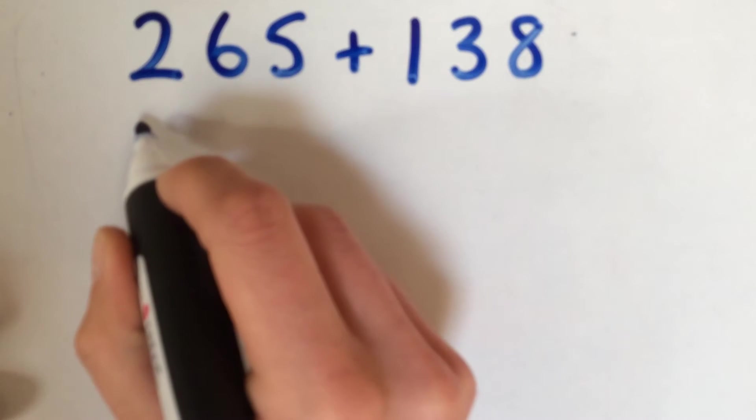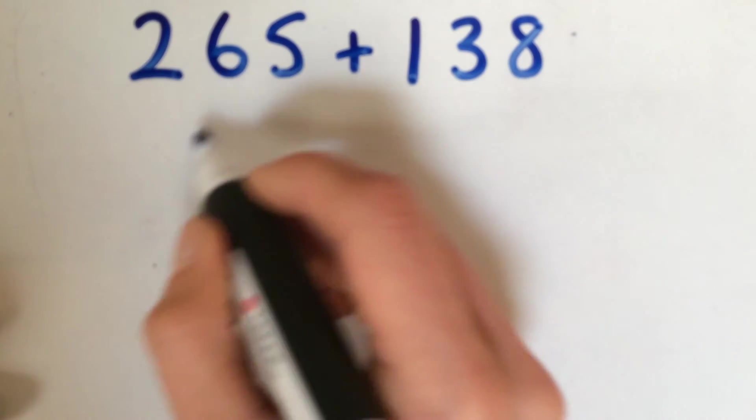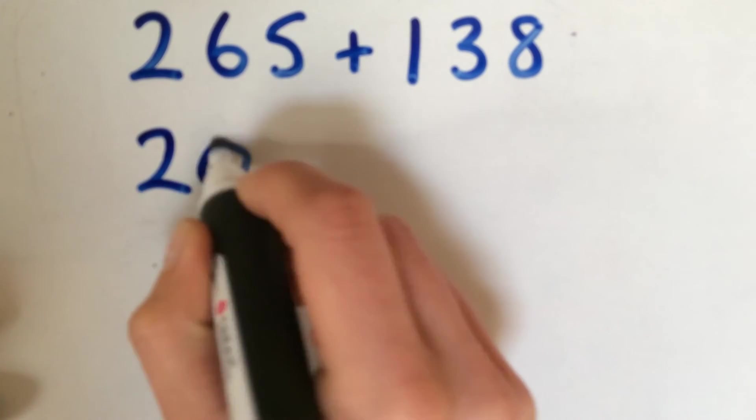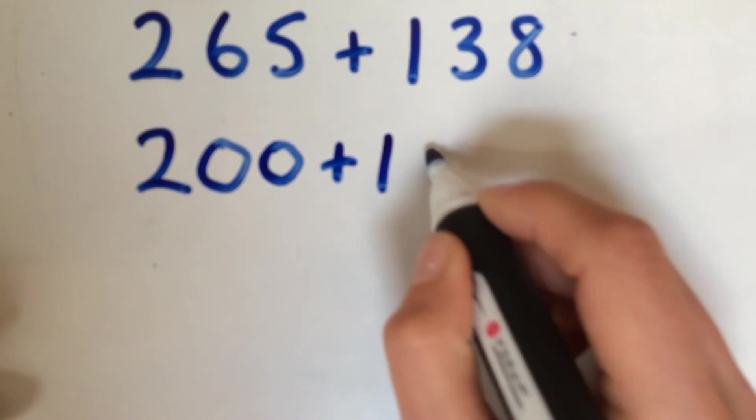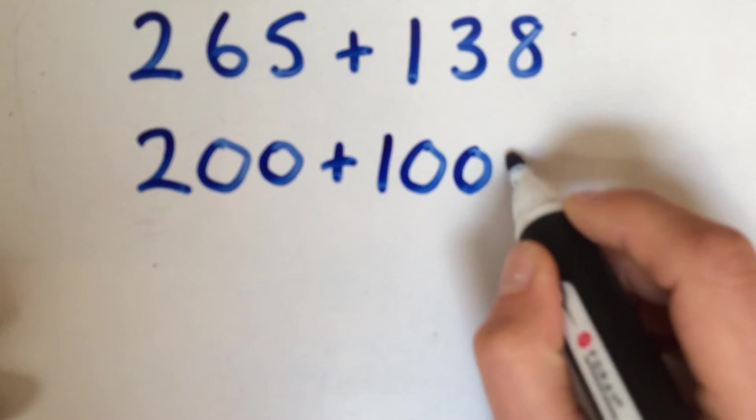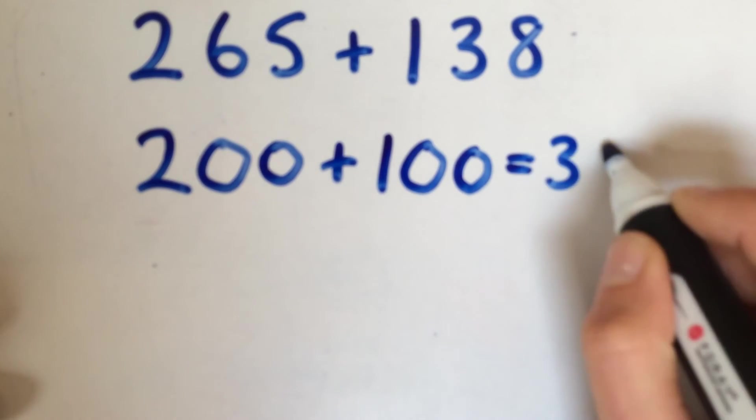For example, take the 200 out of the 265 and then add it to the 100 out of the 138, which would give 300 altogether.